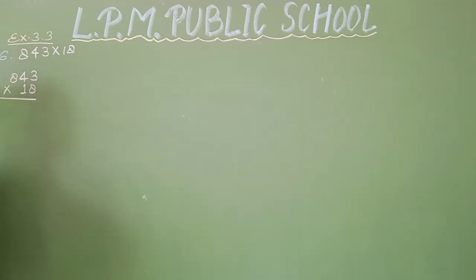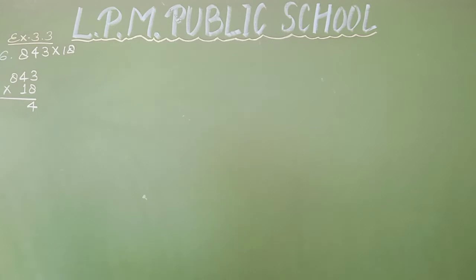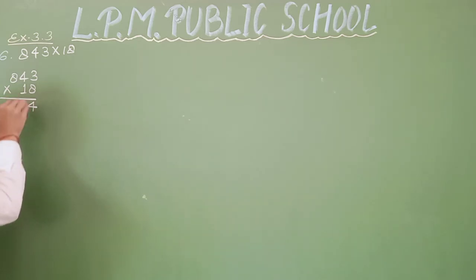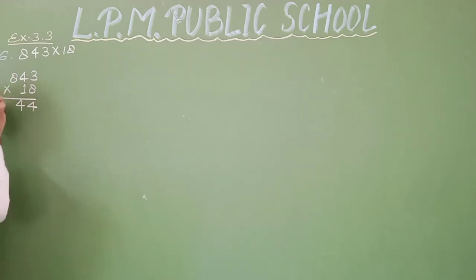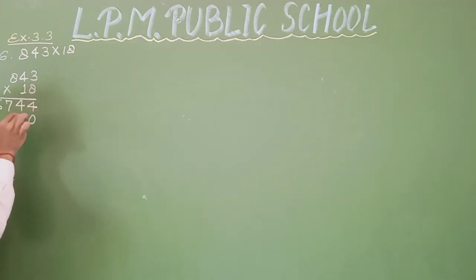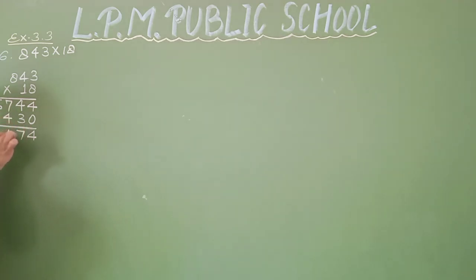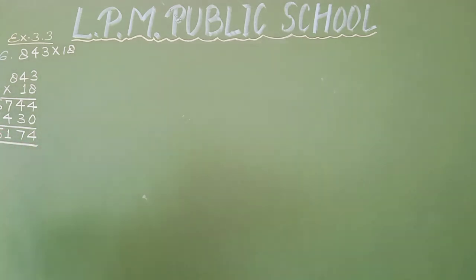843 × 18. Multiply by 1s: 8 × 3 = 24, write 4, carry 2. Then 8 × 4 = 32, plus 2 carry. Then 8 × 8 = 64, plus 3 carry = 67. Now multiply the tens: 1 × 3 = 3, 1 × 4 = 4, 1 × 8 = 8. Now add the products: 4 plus 0 = 4, 4 plus 3 = 7, 7 plus 4 = 11, carry 1. The answer is 15,174.